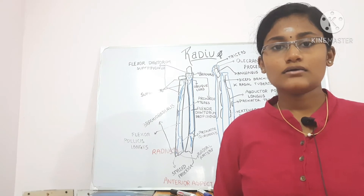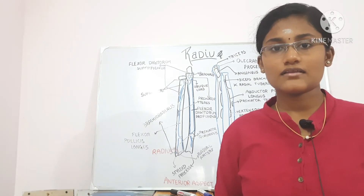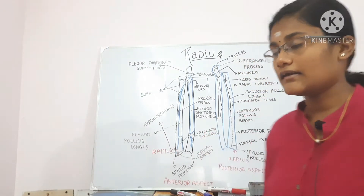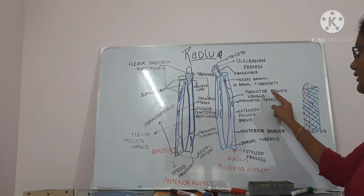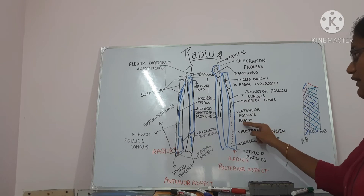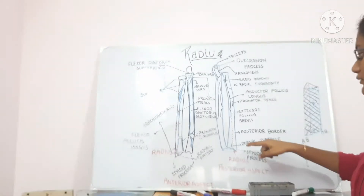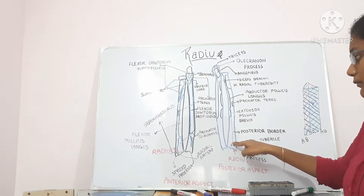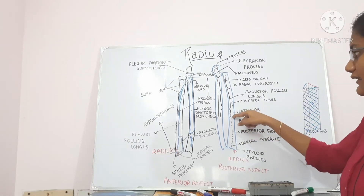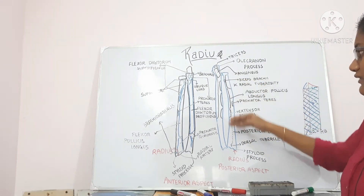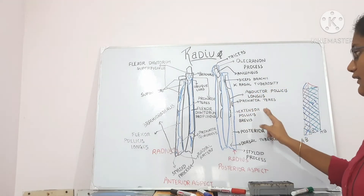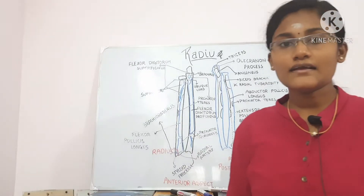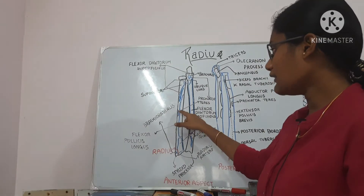The posterior surface lies between the posterior border and the interosseous border. It gives attachment to the abductor pollicis longus and the extensor pollicis brevis muscles in its upper part. The posterior border starts from the radial tuberosity and ends over the dorsal tubercle, and is clearly defined in its middle one-third.